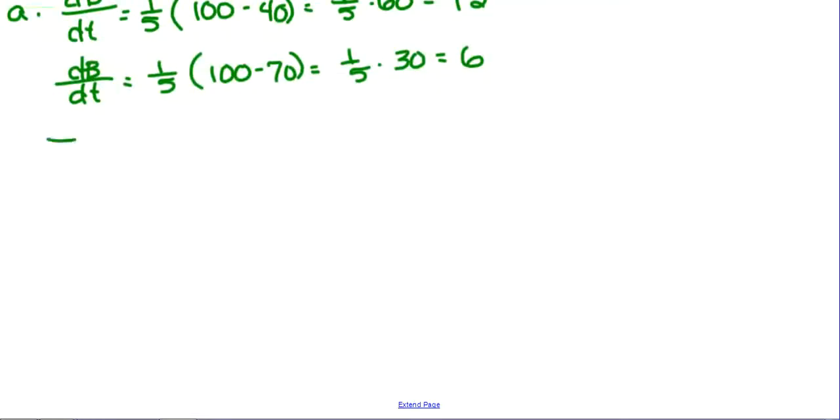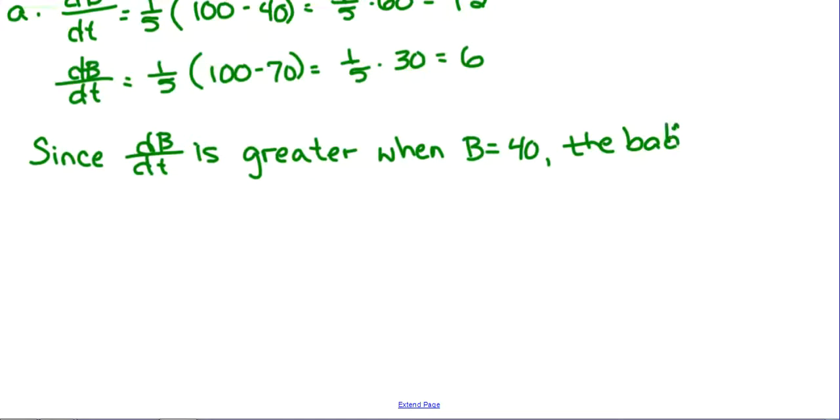Okay, so dB/dt is equal to one-fifth times 100 minus 40. So that's one-fifth times 60, which is 20, right? And then dB/dt is equal to one-fifth times 100 minus 70. So that's one-fifth times 30, which is 6.